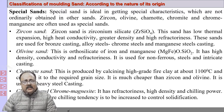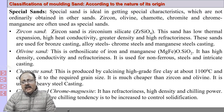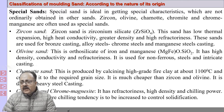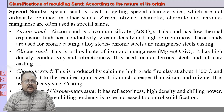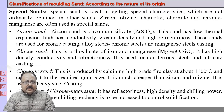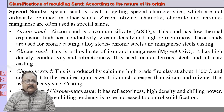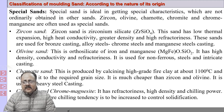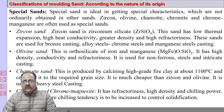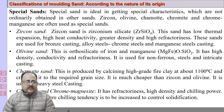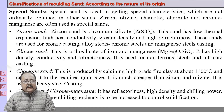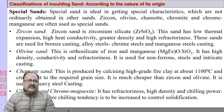Chamotte sand is produced by calcining high-grade fire clay at about 1100°C and crushing it to the required size. The grains obtained are chamotte sand. It is cheaper compared to zircon and olivine and is used for heavy steel casting. Chromite and chrome-manganese magnesite have high refractoriness, high density, and chilling power; they are useful where chilling tendency has to be increased to control solidification of the casting.